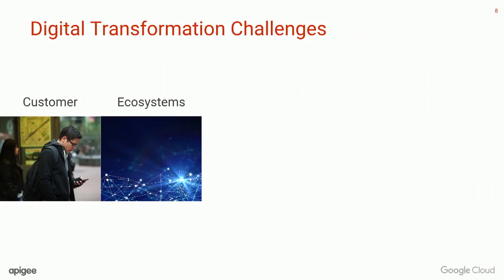Secondly, ecosystems. For many CEOs and CIOs today, this is very much on the agenda — how can I, as an organization, participate externally beyond my trust boundary? The critical thing here is being able to participate externally efficiently. So it's about rapid partner onboarding, rapid external developer onboarding, so that you have a seamless experience of signing up and interacting with your organization.